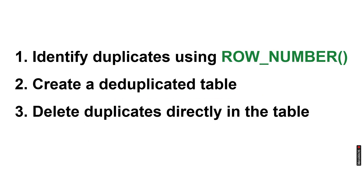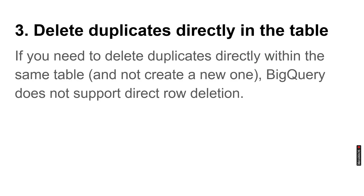Today we are going to cover three things: first, we are going to identify the duplicates by using the ROW_NUMBER; next, we are going to create a deduplicated table; and third, deleting the duplicates directly in the table — this is not possible, friends. BigQuery does not support direct row deletions.